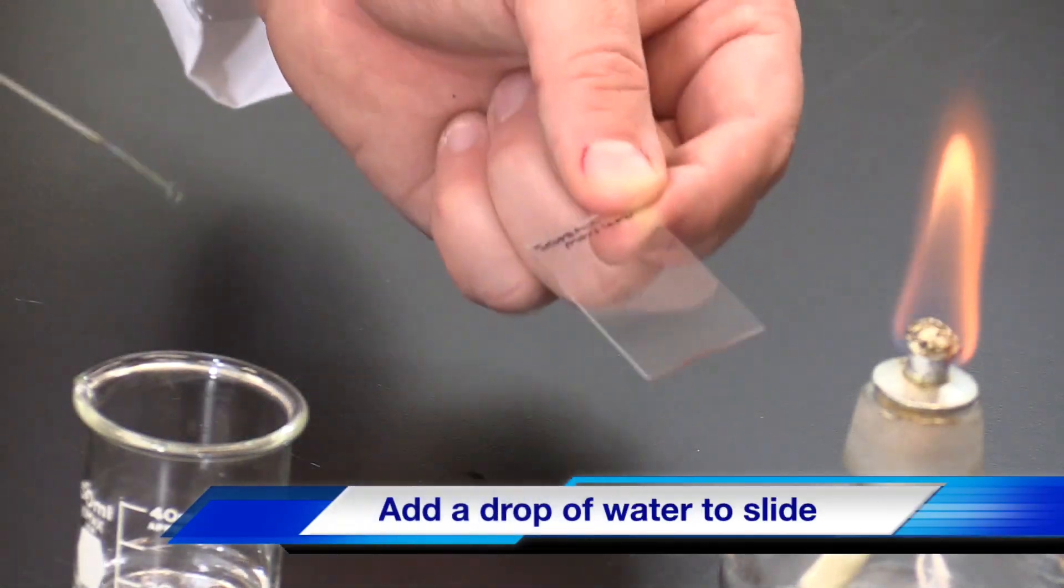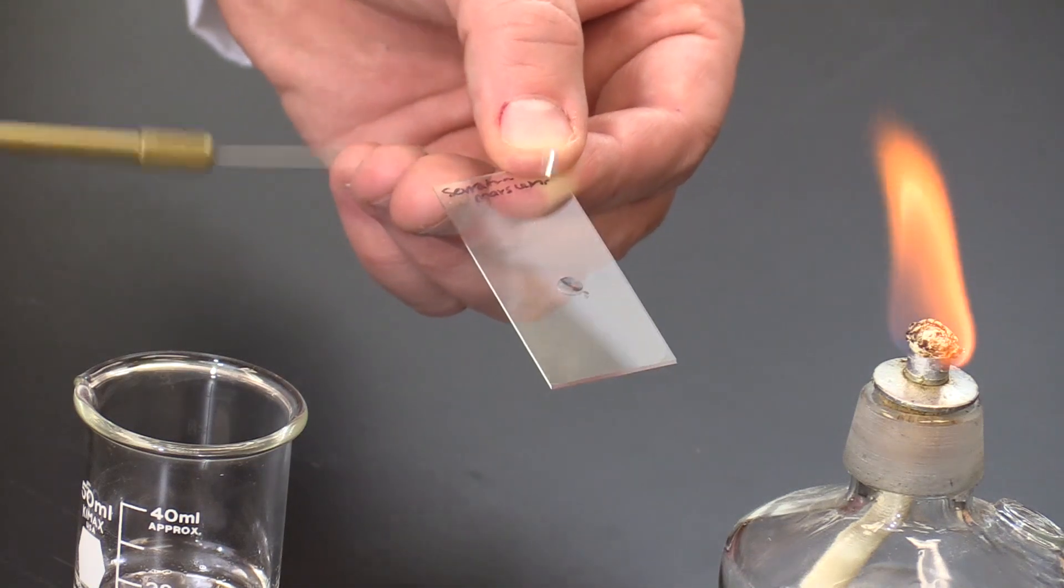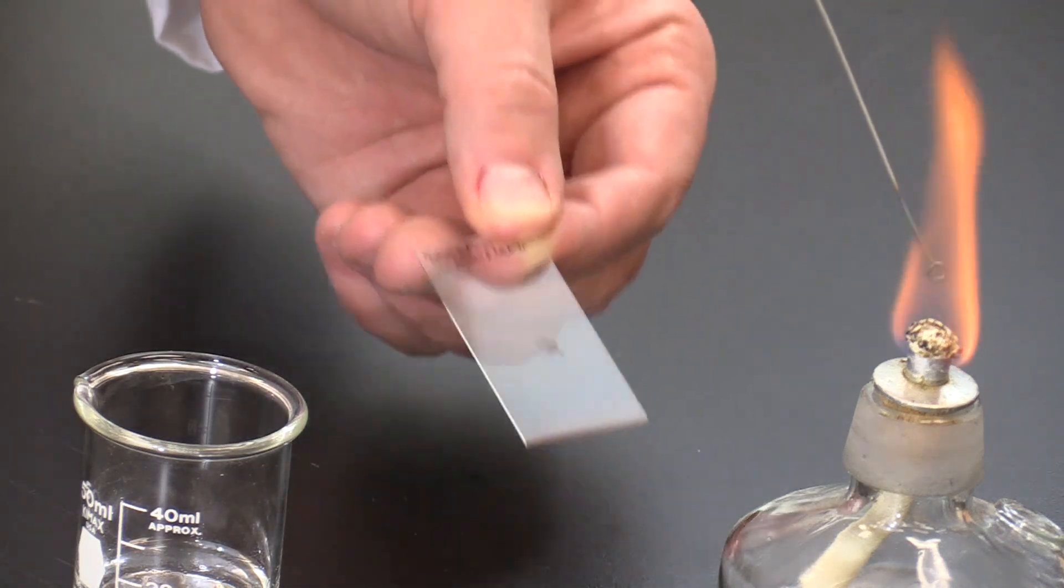Using the loop, place a small drop of water onto the slide. Lightly tap to transfer. After transferring the water, reflame the loop until it glows red.